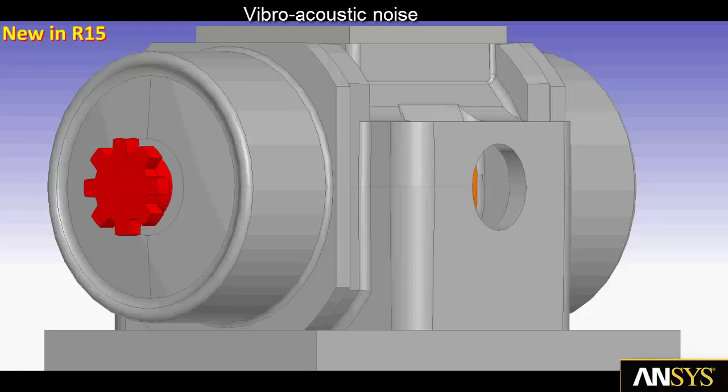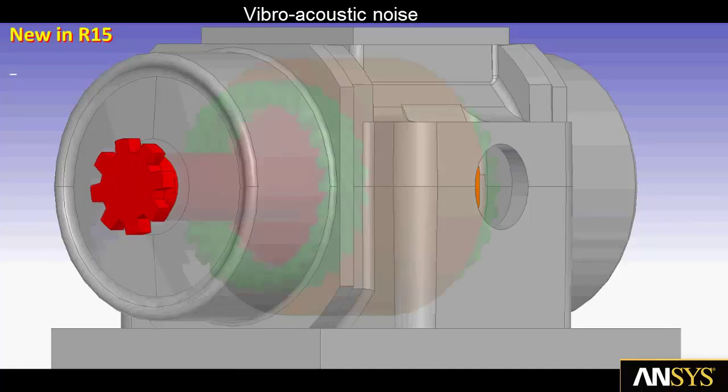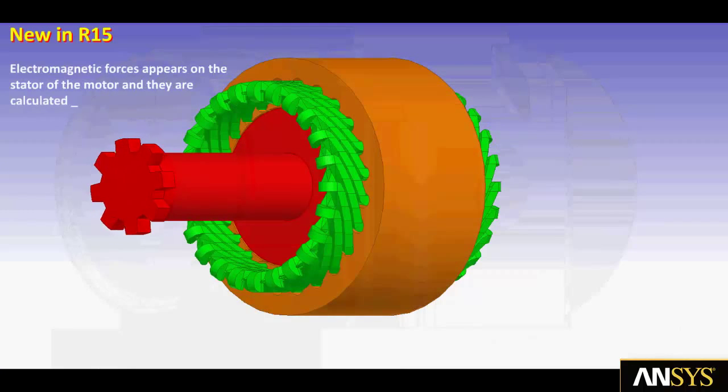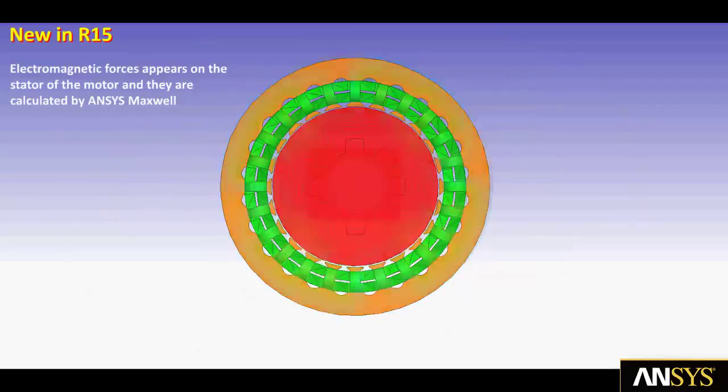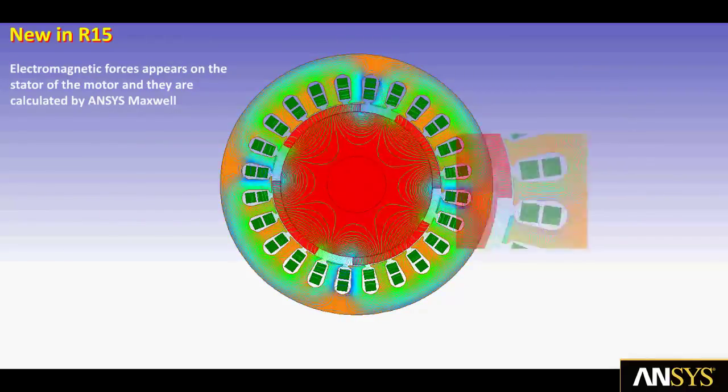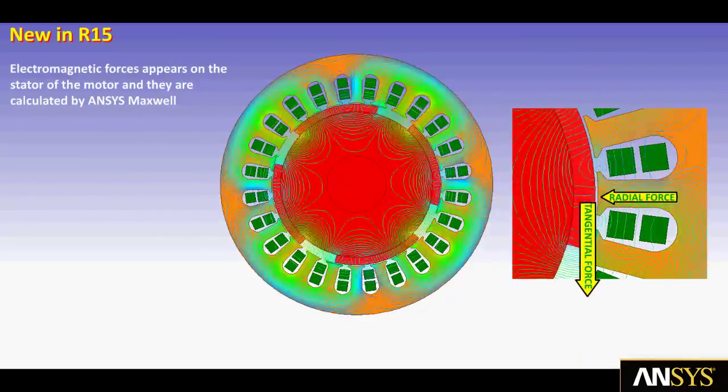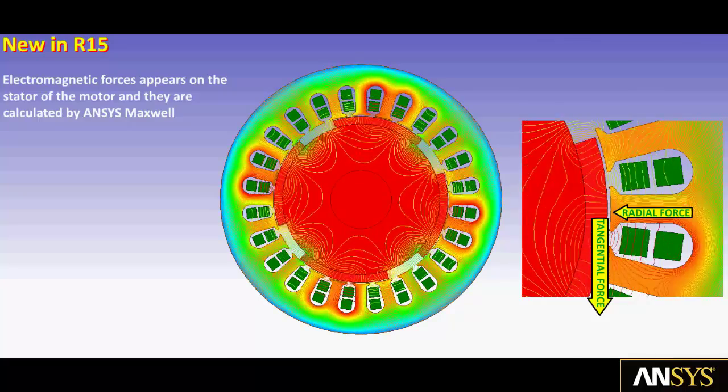The final analysis we will demonstrate is vibro-acoustic noise of the electric motor. Electromagnetic forces on the motor stator are computed by Maxwell. The result is a collection of radial and tangential forces that can deflect the stator and cause harmonic motion that induces the acoustic noise.